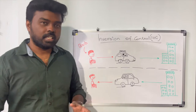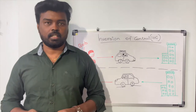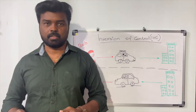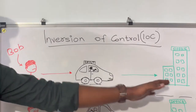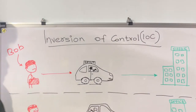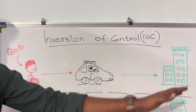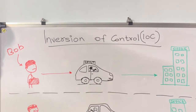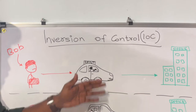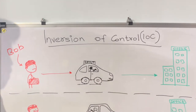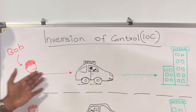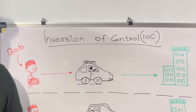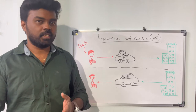Let's try to understand the principle of IOC using a real-world example. Consider Bob, a software developer who is working for a software company. Every morning Bob has to take a car to reach the office. He finds a rental car, pays the rent, gives directions to the driver, and the driver takes Bob to the office.